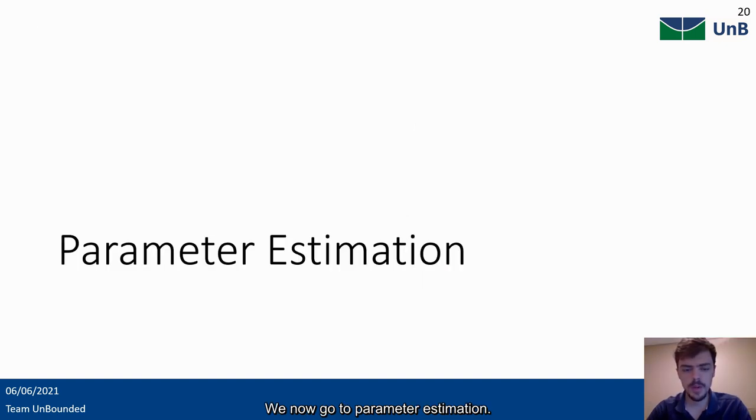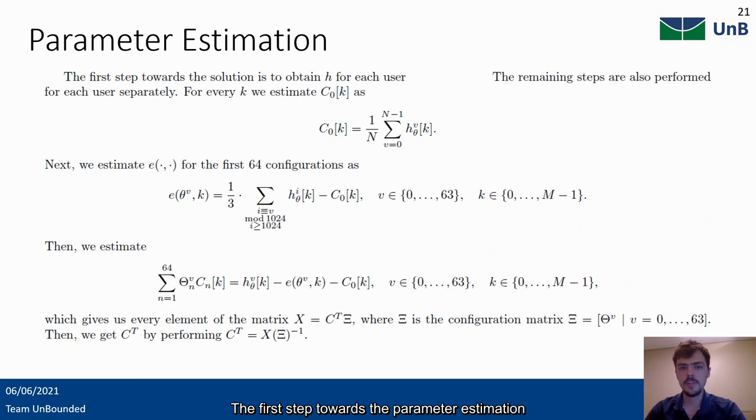We now go to parameter estimation. The first step towards the parameter estimation is to calculate c0 as the simple average of the channel samples for all n configurations. Next, since the last three sub-blocks only contain higher order terms, we average these samples in order to estimate e theta k for the first 64 configurations. Lastly, we discount the constant term and the higher order term, leaving the estimate for the linear term, which allows us to obtain the coefficient c by performing a simple matrix inversion.